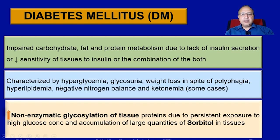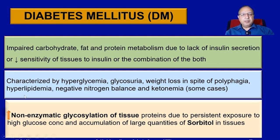Diabetes mellitus is characterized by hyperglycemia, loss of glucose through urine — glycosuria — and weight loss despite polyphagia. Weight loss keeps occurring although the person has a higher appetite for food, because there is increased loss of glucose, and one gram of glucose gives roughly 4.5 kilocalories. It also leads to hyperlipidemia, negative nitrogen balance, and in some cases increased ketone levels.